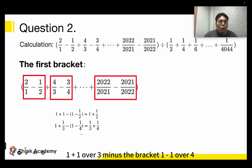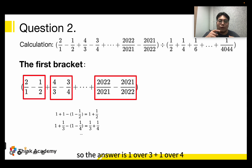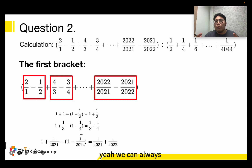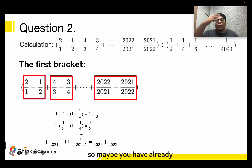Now let's look at the second group: (1 + 1/3) minus (1 − 1/4), which represents 4 over 3 minus 3 over 4. So the answer is 1 over 3 plus 1 over 4. We can always apply this same method to the last group as well, giving us 1 over 2021 plus 1 over 2022.